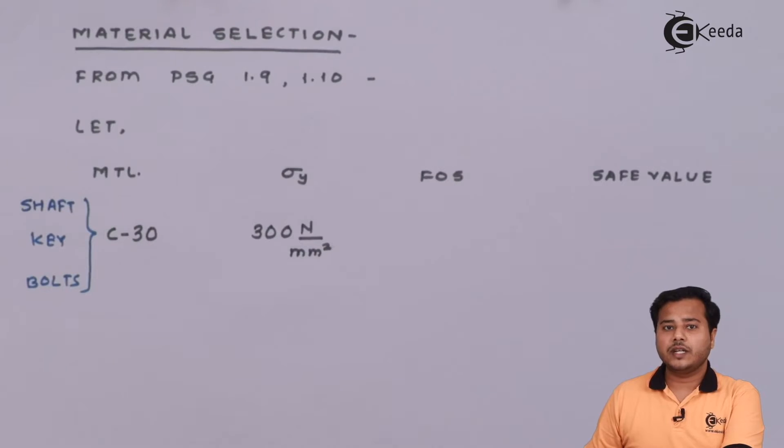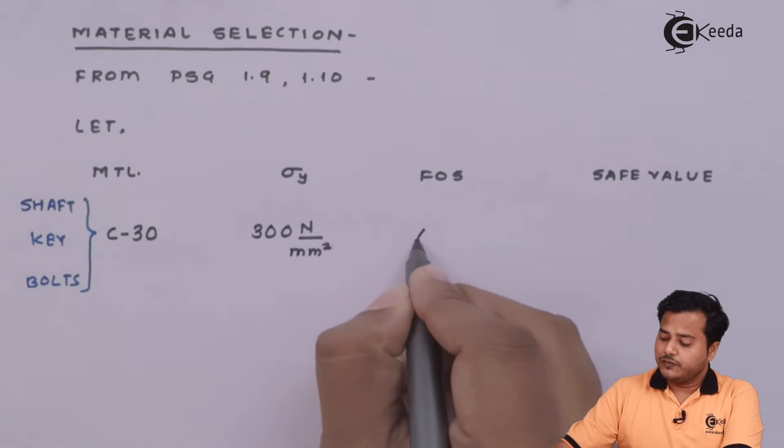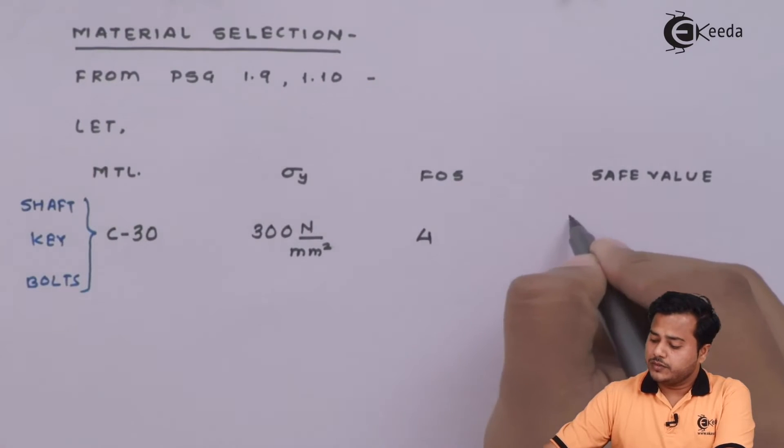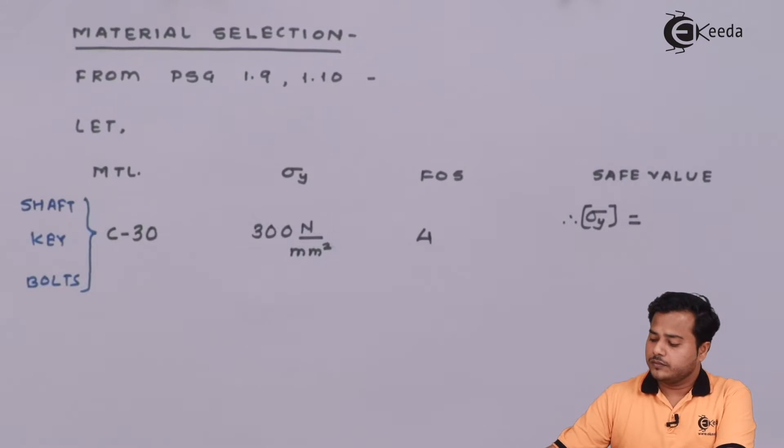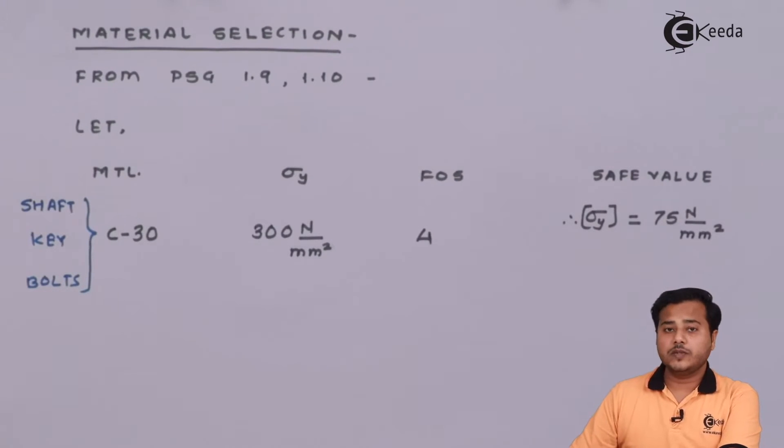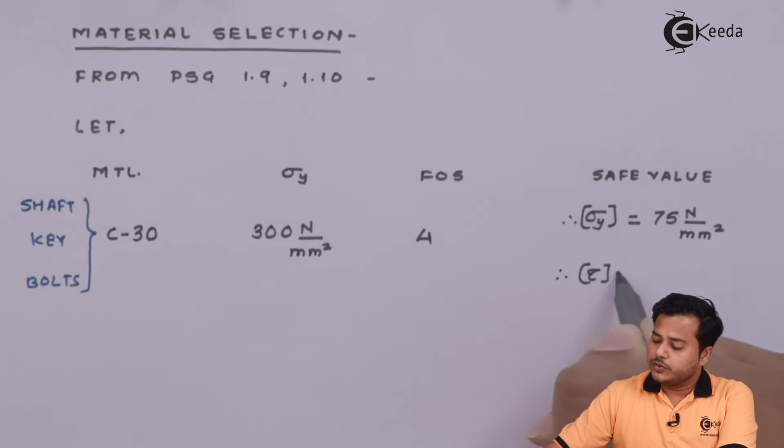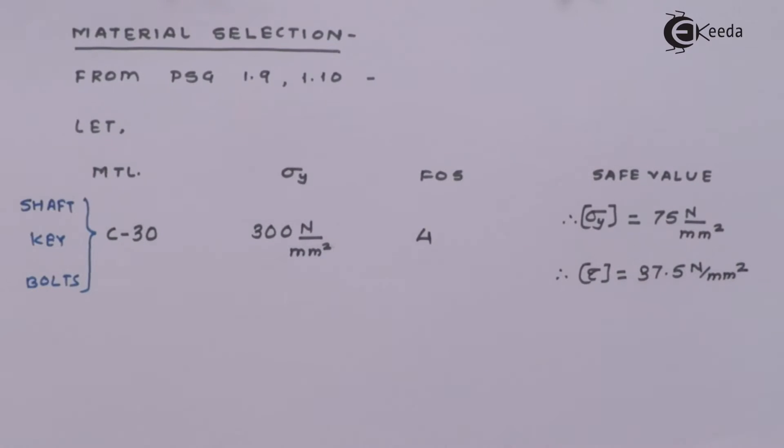We can figure out the safe values. This value can be same in case of compression, but if conditions are given we may have to consider larger value in compression. Therefore, the safe value for tau comes out to be 37.5 N per mm square. Let us find out the value of compression also, somewhere around 1.4 times the standard value of tension. If we substitute, we will get somewhere around 105 N per mm square. This was material selection.